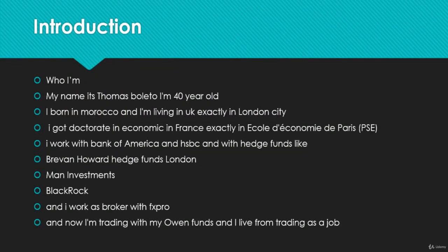Hello everyone. Let's start by introducing myself. My name is Thomas Polito, I'm 40 years old, I was born in Morocco and I'm living in the UK, exactly in London City. I got a doctorate in Economics in France, exactly at École d'Économie de Paris, PSE.